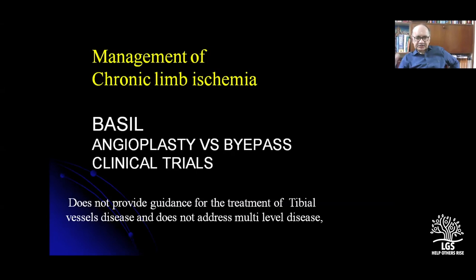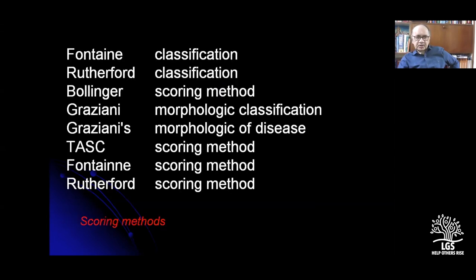The BASIL trial — angioplasty versus bypass — does not provide guidelines for treatment of tibial vessels, and does not address multilevel diseases. Classification systems include Fontaine's classification, which has been there for 30 years, the Rutherford American classification, the Bollinger and Graziani Italian morphological classifications, and the Fontaine scoring method.